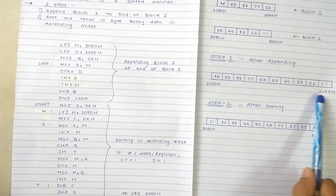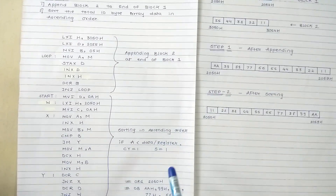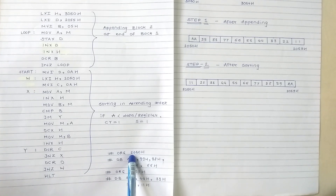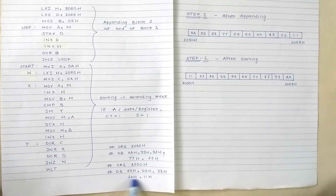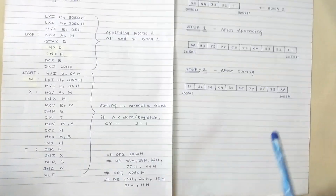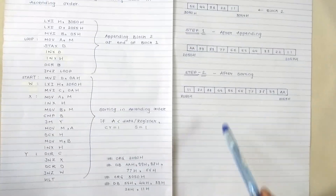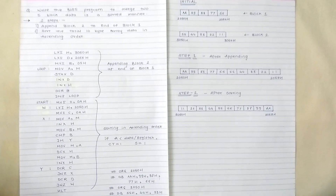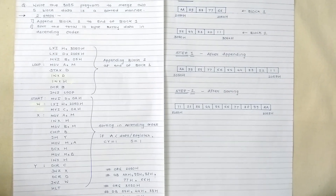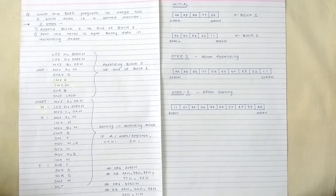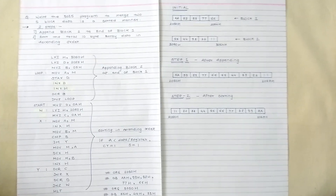In this way the array will be sorted. We load the five-block data into address 2050H and the other five-block data into 3050H — the two data blocks are located at distinct places. This is the 8085 program to merge two block data in a sorted manner. I hope you understand this. If you like this, please like, share, and subscribe to my channel. Thank you.